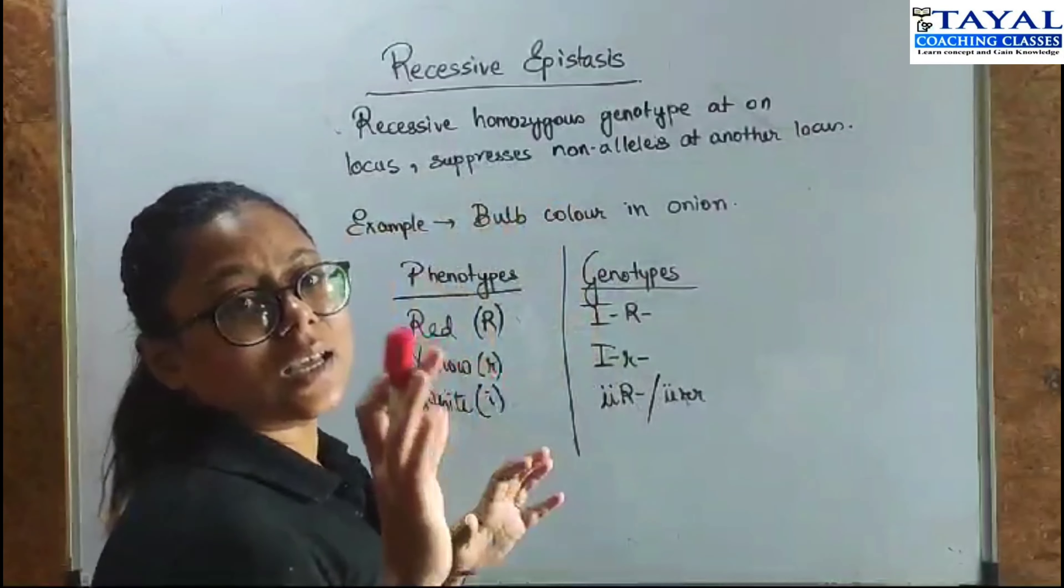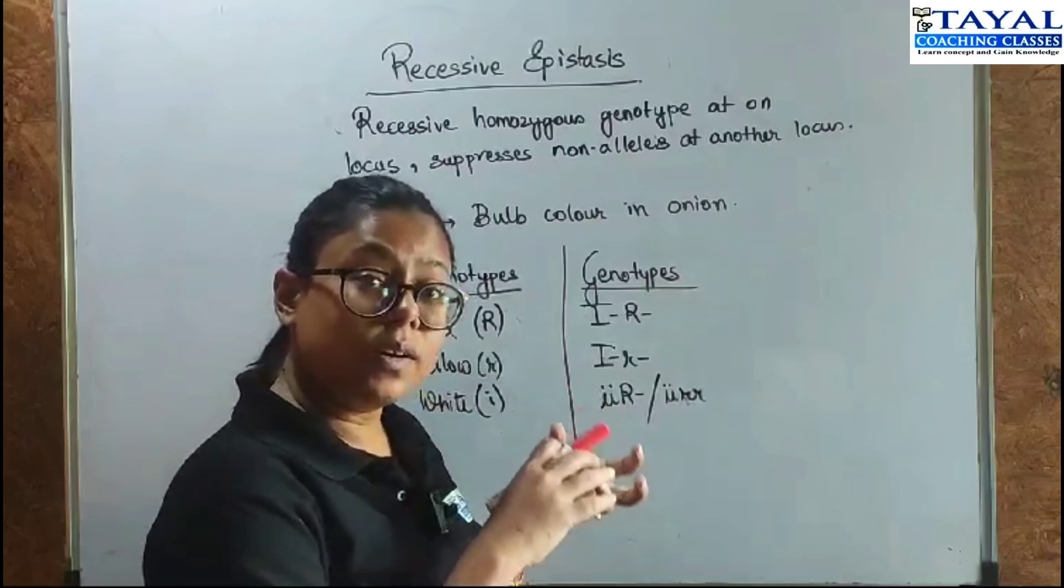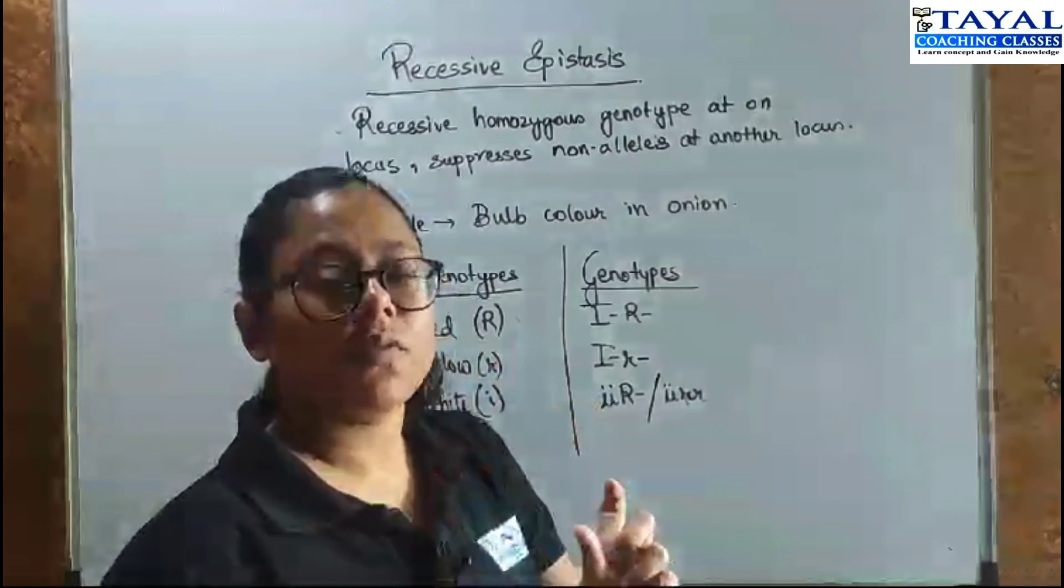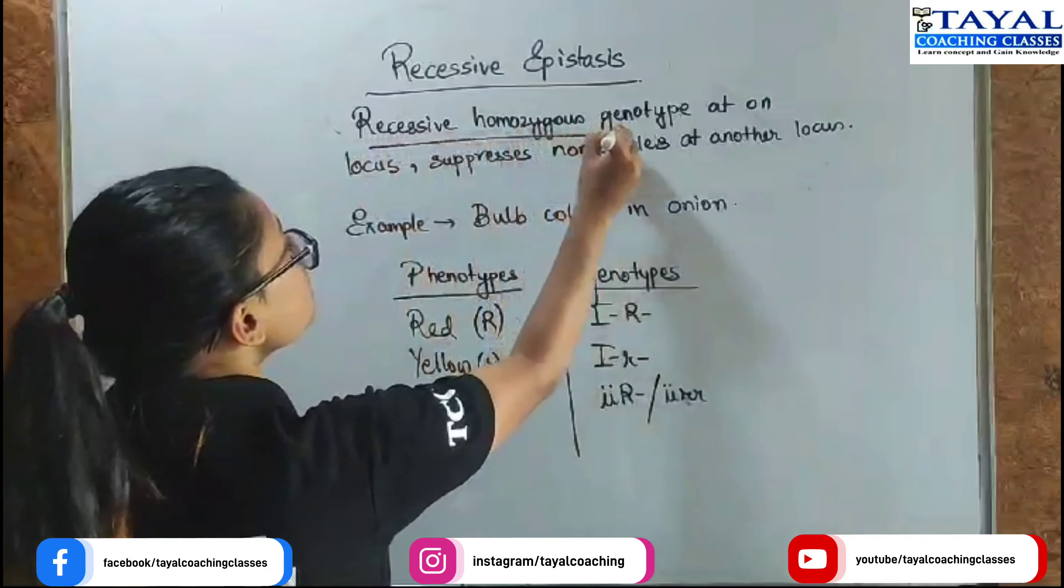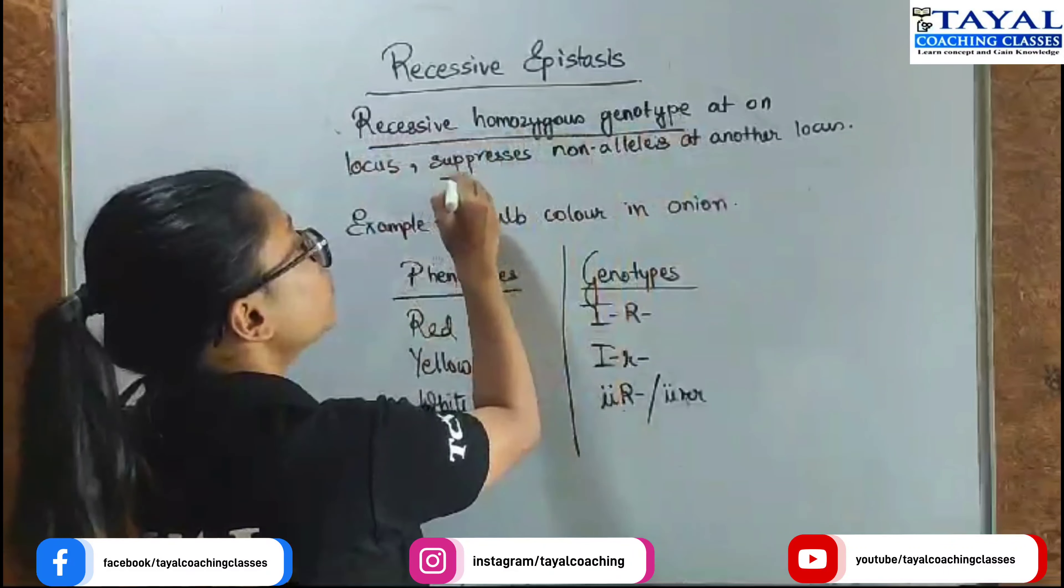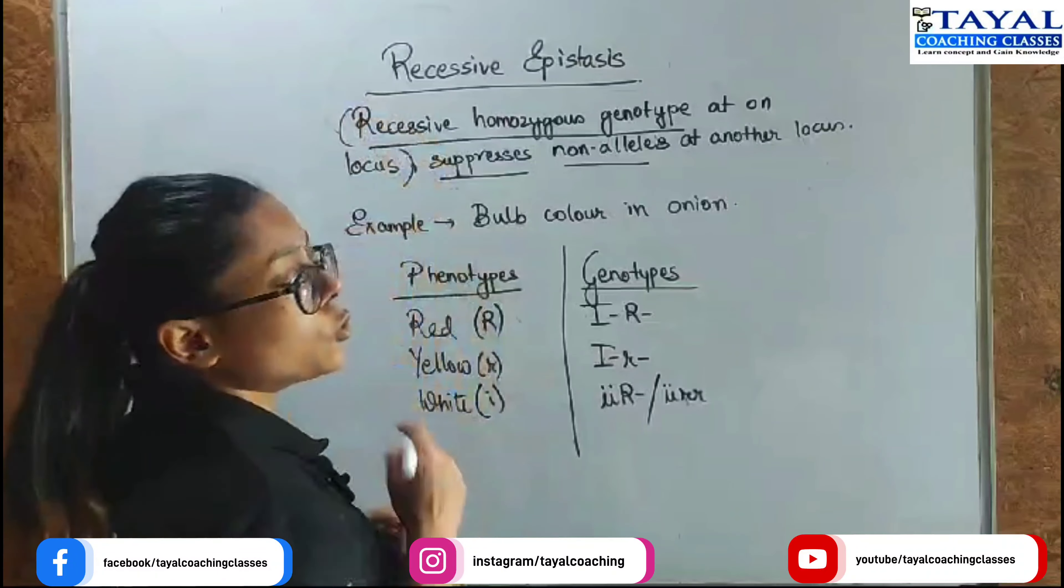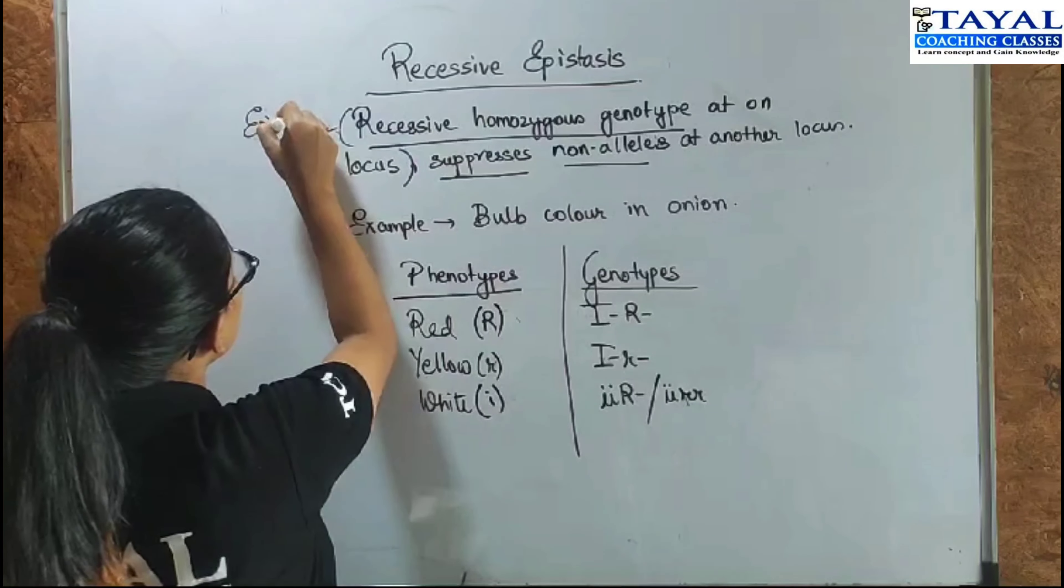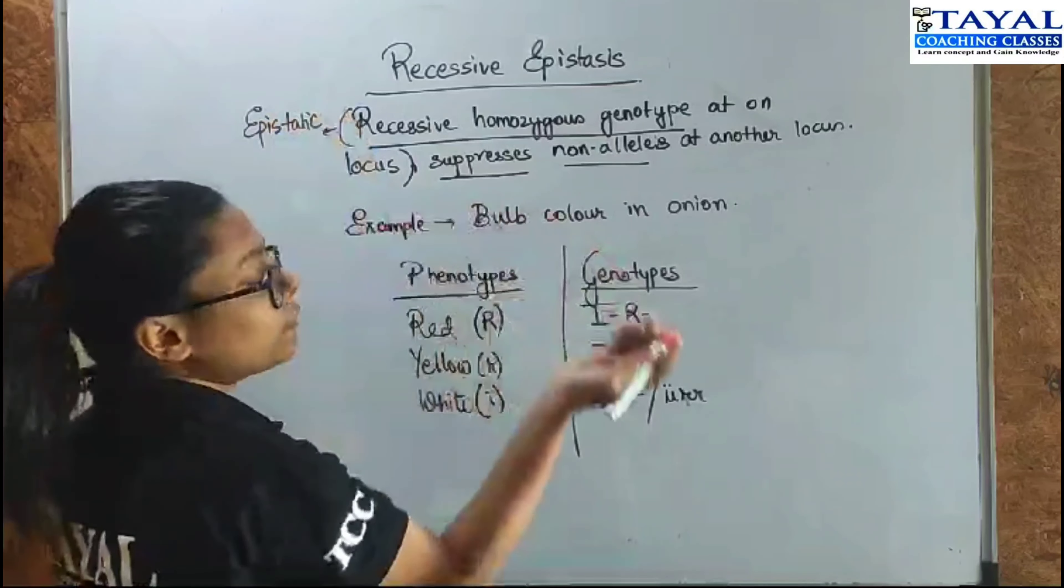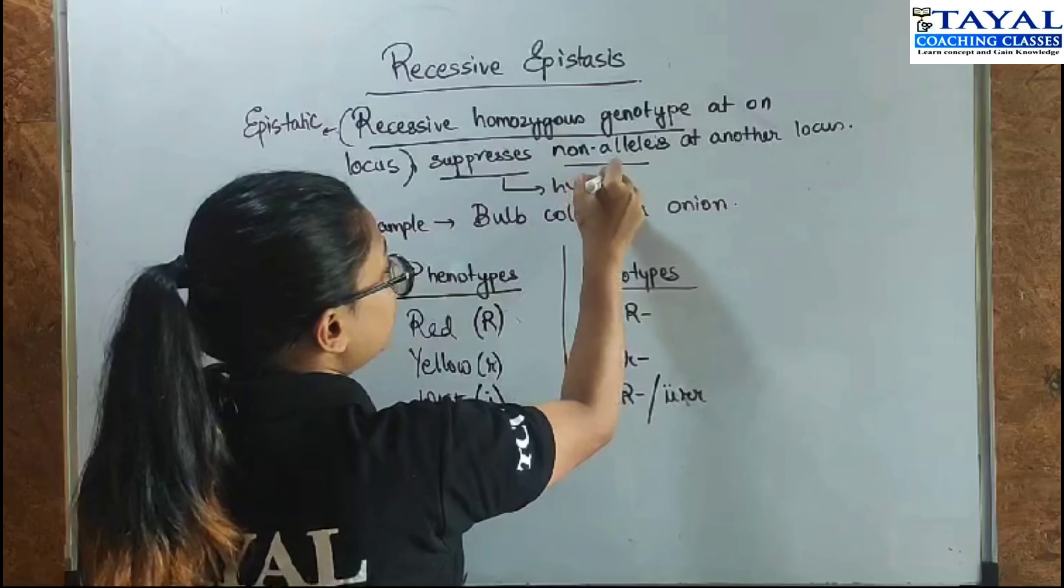So in this case, just like in dominant epistasis, we had the dominant pair showing an effect or expressing itself. Here, the recessive homozygous genotype will be able to suppress the non-alleles. So the recessive homozygous genotype in this case becomes the epistatic gene and the non-alleles which get suppressed are the hypostatic ones.